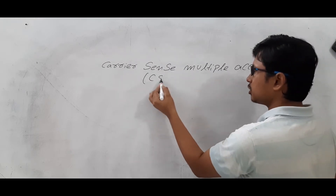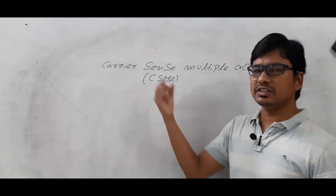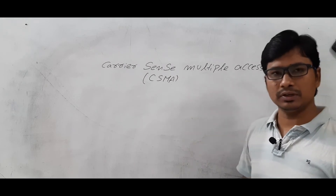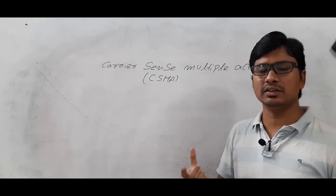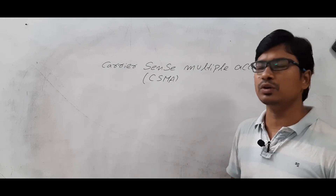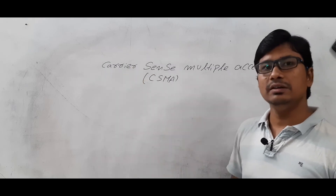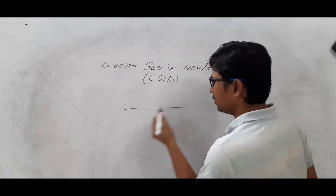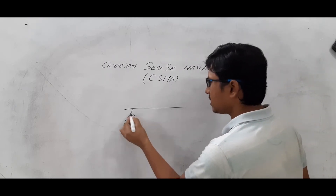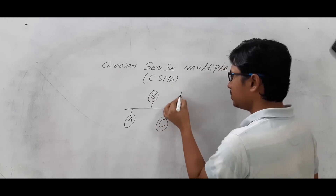It can be shortened as CSMA. The name itself tells you the mechanism — it will sense the carrier. We have multiple nodes in a medium and all of them want to send the data. Let's take that you have a common medium and node A is connected, node B is connected, node C is there, and node D is there.